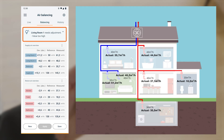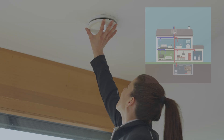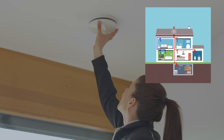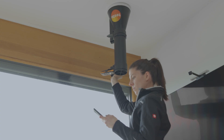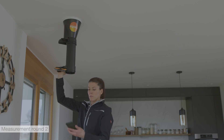The defined outlet in Living Room 1 is adjusted on the basis of the recommendation. To do this, the valve must be adjusted to reduce the volume flow. This marks the start of the second round of measurements.